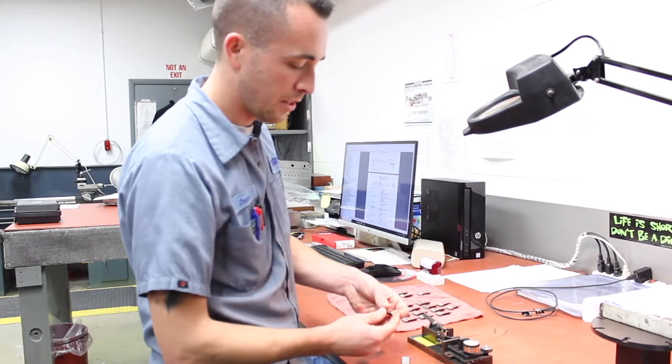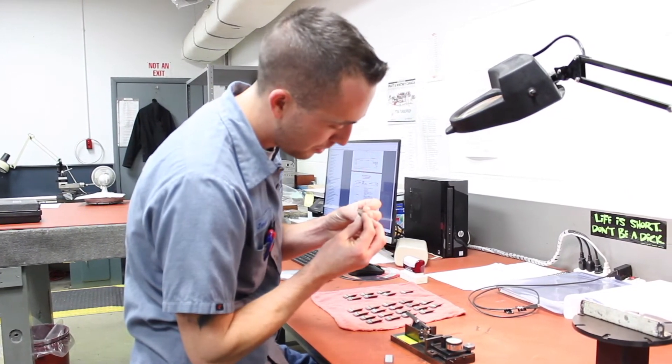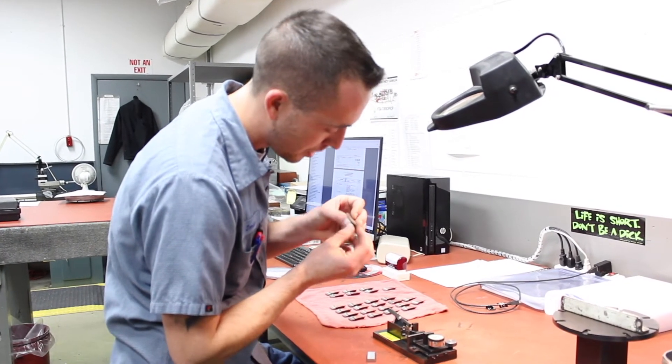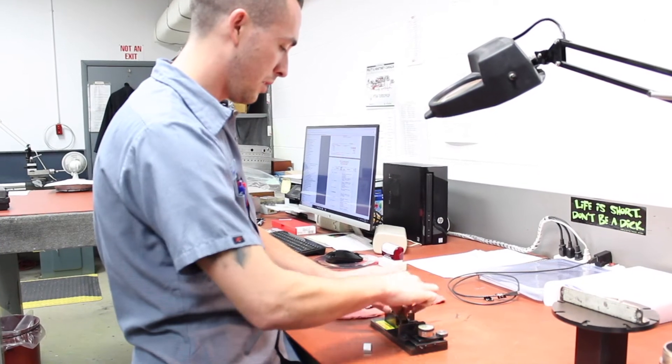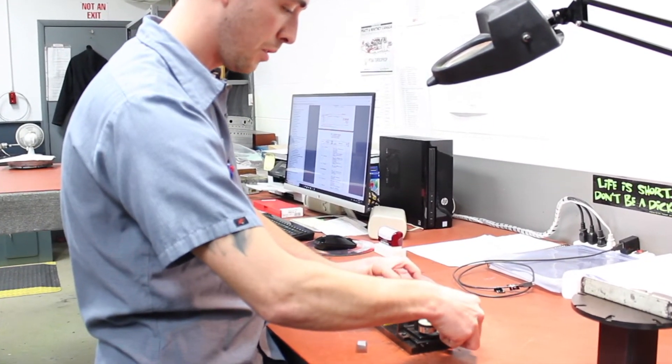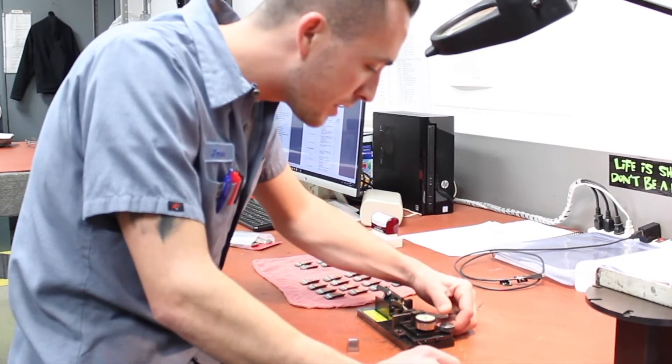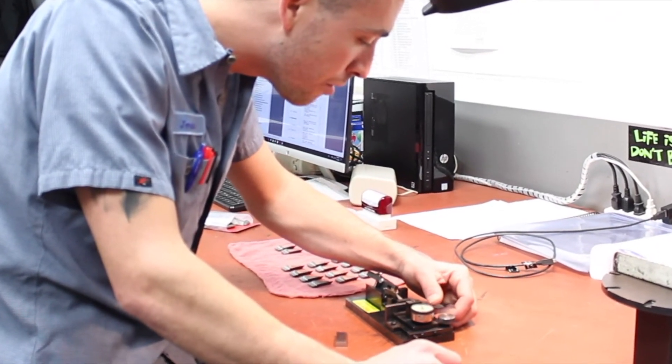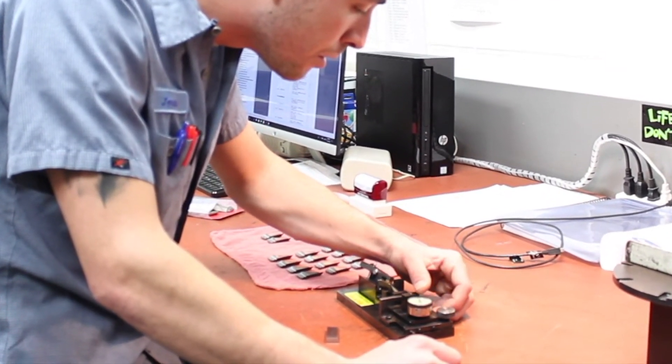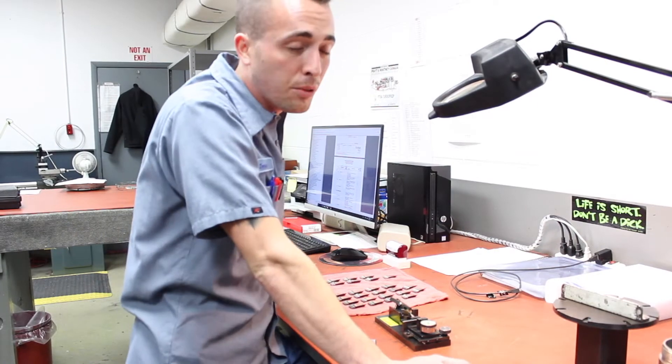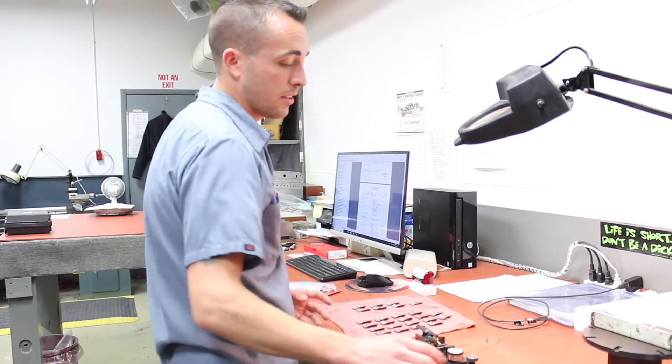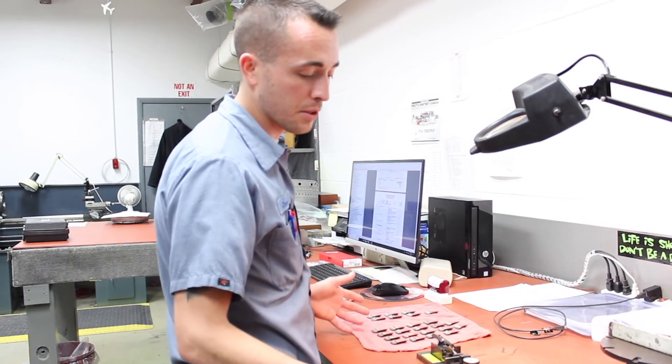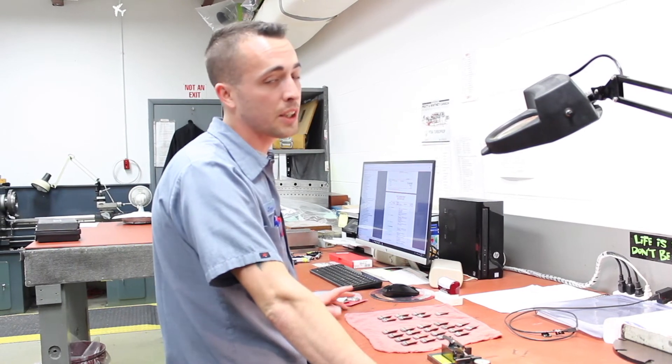So when you take a blade to stretch it, this one's marked 0.240. And you install it in the stretch checker and we slowly run it down in. It is at 43 and a half, which means it has stretched three and a half thousandths since it was originally marked when the blade was new. Pratt & Whitney only allows you to have up to three thousandths of stretch.